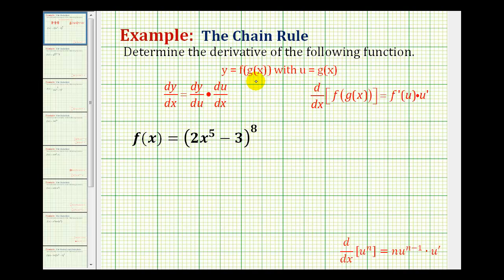Once we know we have a composite function, one of the most important things we need to do is identify the inner function of the composite function. And once we identify the inner function, we want to let that equal u. So in this case, notice that g of x is the inner function, so we'd let u equal g of x.